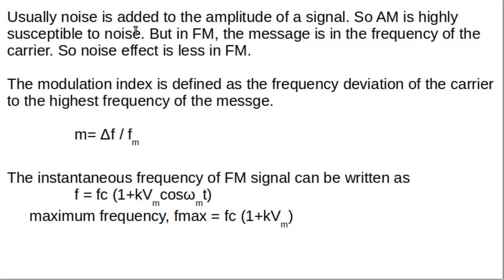In an FM signal, the message is not in the amplitude but in the frequency. So if noise is added to the FM signal modifying its amplitude, our message or information is secure because it is kept in the frequency, not the amplitude. Therefore, noise effect is very less in FM compared to AM — this is a big advantage of FM over AM.